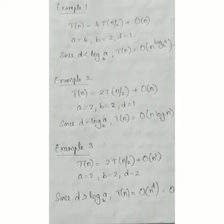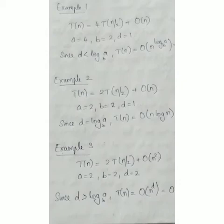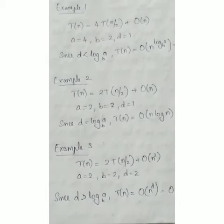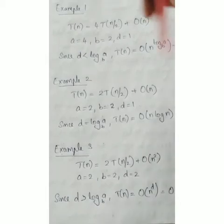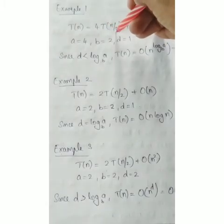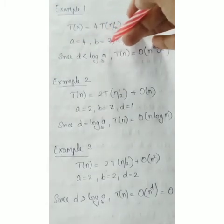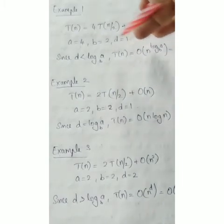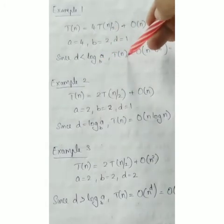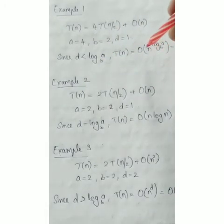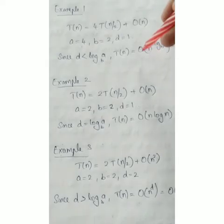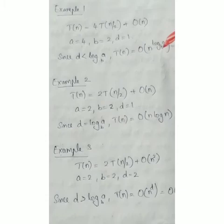Now, about the first example: T of n equals 4T(n/2) plus Big O of n. Here a equals 4, b equals 2, d equals 1. Since d is less than log a to the base b, we apply the third case, so T of n equals Big O of n raised to log a to the base b.